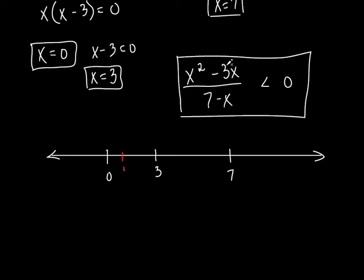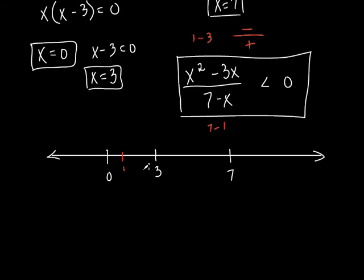So let's put 1 in and see if we get a positive or negative answer. 1 squared is 1, minus 3 times 1 which is 3 — what sign is that? 1 minus 3 is negative. I don't care about the number itself, just the sign. What about the bottom? 7 minus 1 is 6 — that's positive. So any number between 0 and 3 is always going to give me a negative answer. This section always comes out negative.